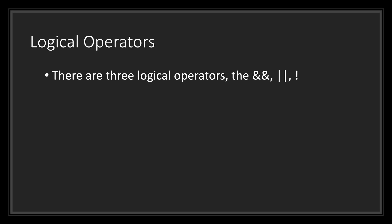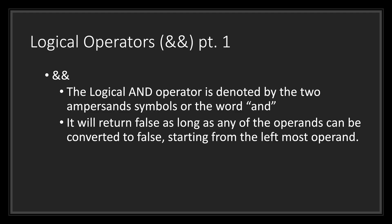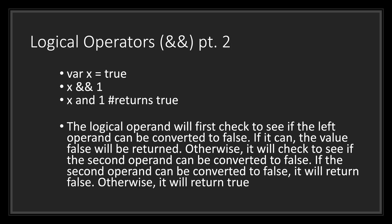In GDScript, there are three logical operators: the AND symbol, the OR symbol, and the NOT symbol. The logical AND operator is denoted by the two ampersand symbols or the word AND in GDScript. It will return false as long as any of the operands can be converted to false, starting from the leftmost operand. The logical AND operator will first check to see if the left operand can be converted to false. If it can, the value false will be returned.